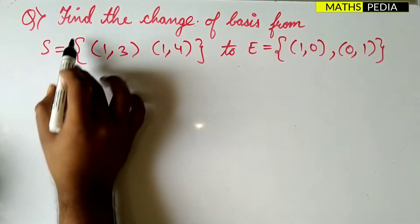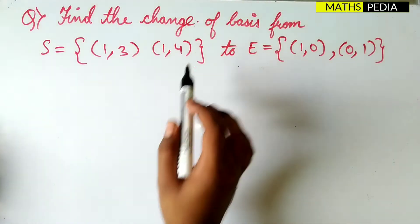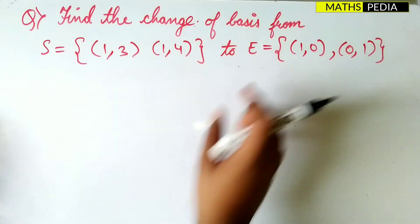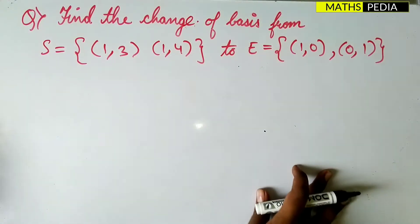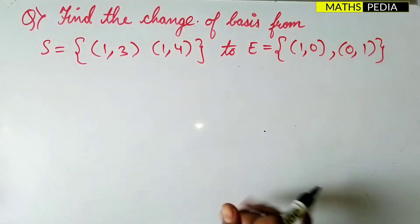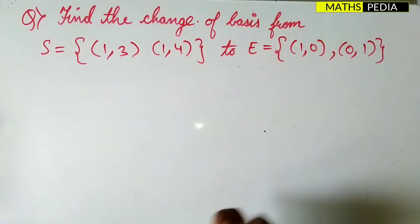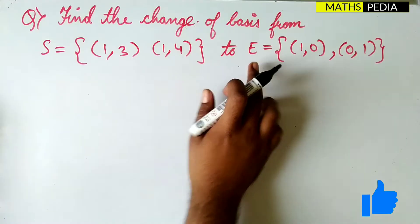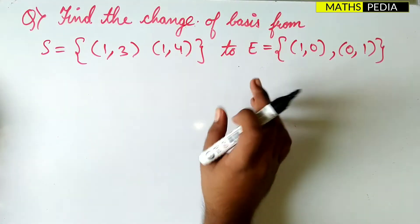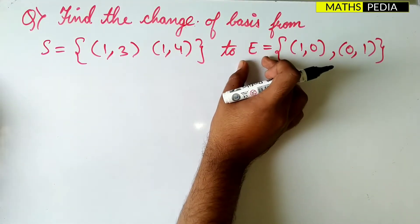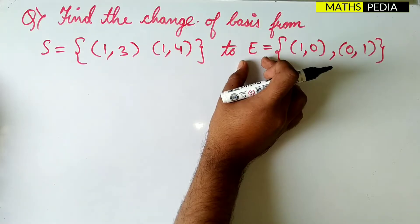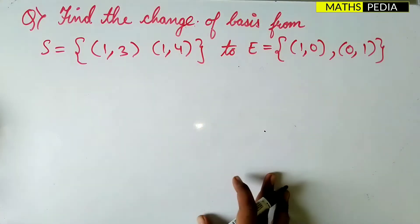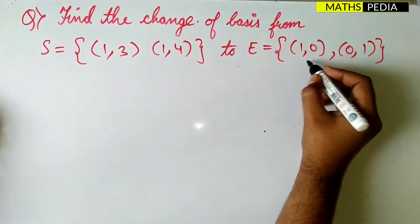Here we are going to discuss one problem: find the change of basis from S to E and vice versa. It will be in the form of a matrix. For S to E, we need to find the change of basis, so whatever E has, we take it and express it in the form of a linear combination.